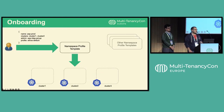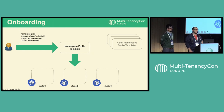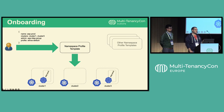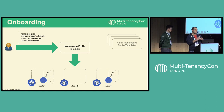The onboarding process to the Ethos platform is pretty easy. The user just needs to specify some custom values such as the namespace name, the admin, edit, and view LDAP groups, the clusters where the namespace will be deployed, and the namespace profile template. The namespace profile template is then rendered and deployed on the clusters, and the tenant can deploy their application inside, with Kubernetes objects restricted to their specific team and pods isolated by default network policies.